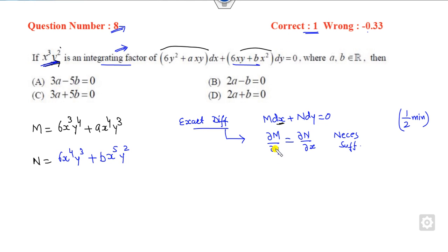Now you can compute the partial derivative with respect to y. The partial derivative with respect to y is 24x^3y^2 plus 3ax^4y^2. Now you can equate the coefficient of the partial derivative of N with respect to x. It will be 24x^3y^3 plus, with respect to x, 5bx^4y^2. Now equate the coefficients. It will be y^3. This will be cancelled out so 3a equals 5b. You can see this is the only right answer for this problem.